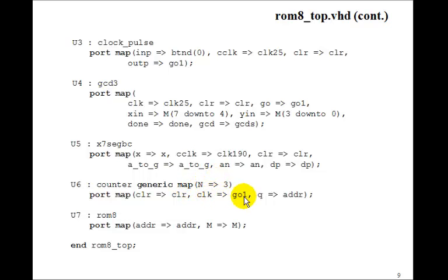We'll use our generic counter. We'll make it 3 bits. And the clock comes from GO 1. That is the single clock pulse. And the output Q will be the address to our ROM. And so here's our ROM 8. So that's the address. And then the output M goes to M.